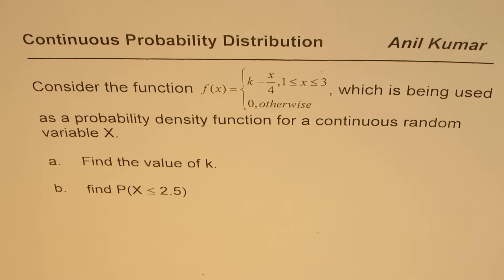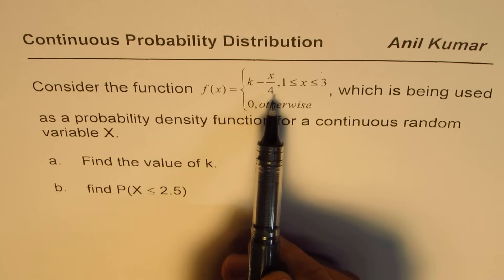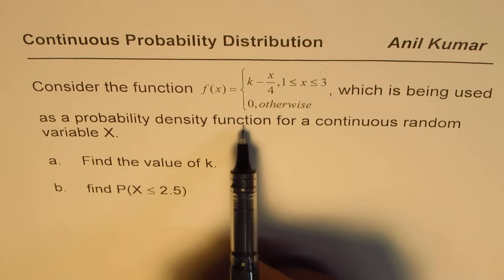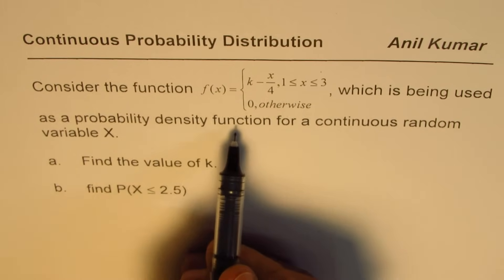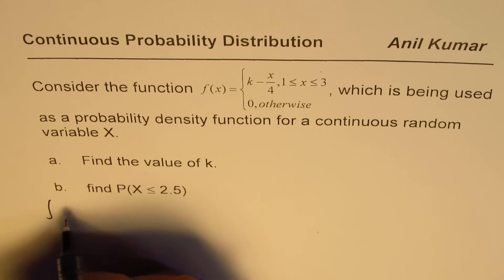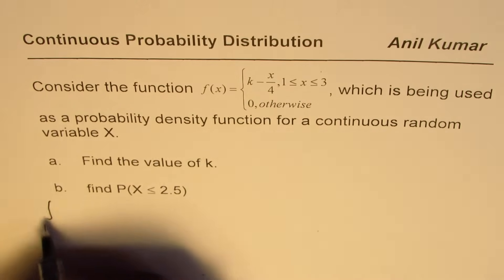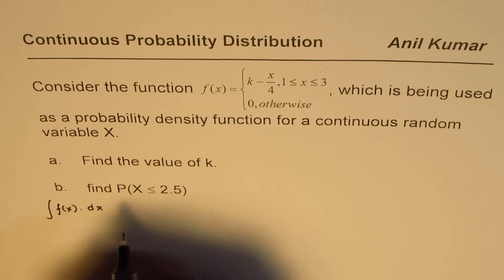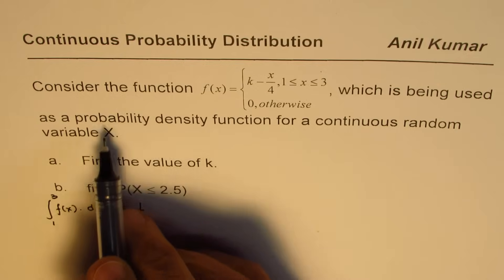Let us see how to solve such a question. It's given to us that f(x) equals k minus x over 4, when x is greater than or equal to 1 and less than or equal to 3, is a probability density function for a continuous random variable. If f(x) is a probability density function, the area under this curve within the given region should be equal to 1. So, the integration of f(x) within the limits 1 to 3 should be equal to 1 — that is by definition for a probability density function.